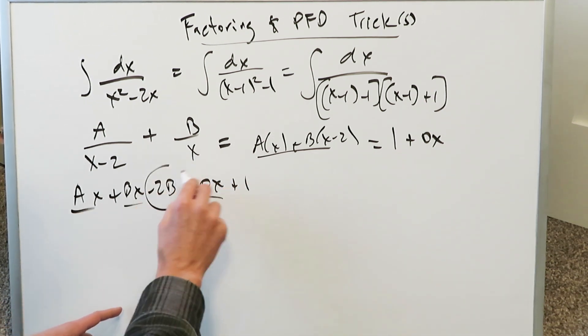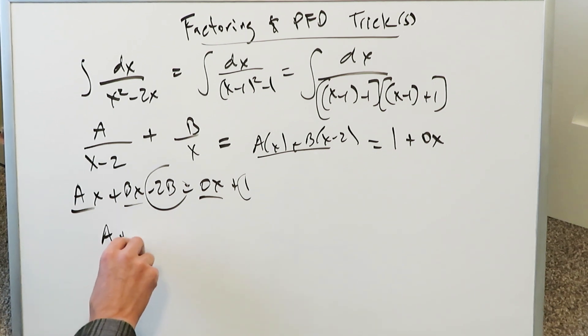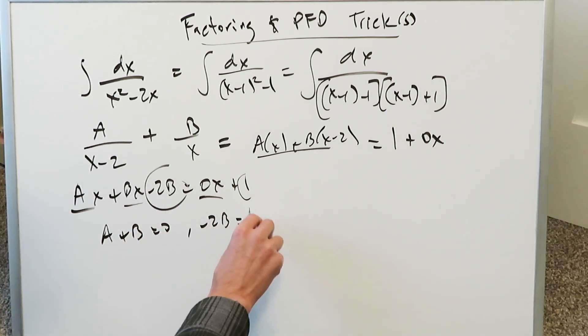You have this, this, and this. And then you have that and that. You have a plus b is equal to 0. Then you have a minus 2b is equal to 1, which means b is equal to minus 1 over 2.